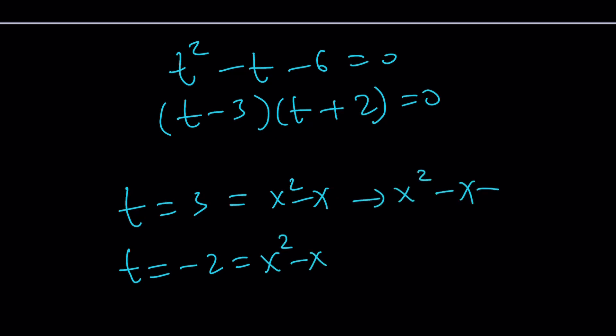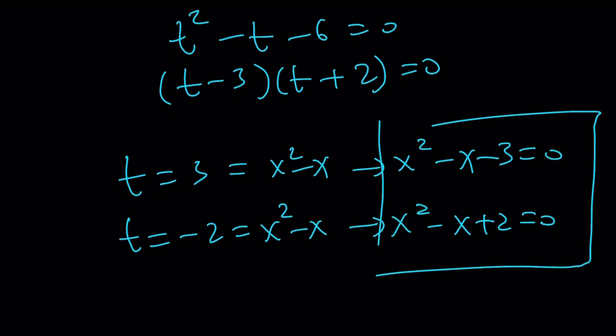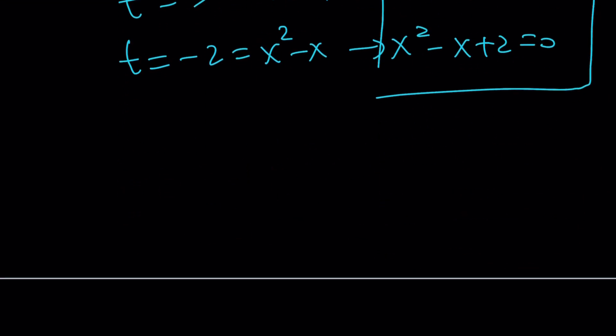So you get two equations from here. x squared minus x minus 3 equals 0, and x squared minus x plus 2 equals 0. If you did the factoring like I said earlier, the method with negative 3 and 2 would work. What are the solutions from here? x equals 1 plus minus the square root of 13 over 2. And we have two complex solutions because this has a negative discriminant.